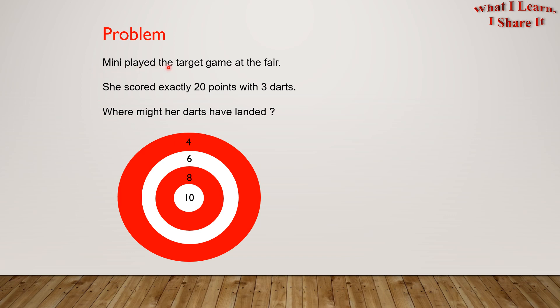Minnie played the target game at the fair. She scored exactly 20 points with three darts. Where might her darts have landed? So here is her dart board and the different point amounts.